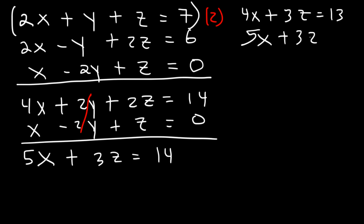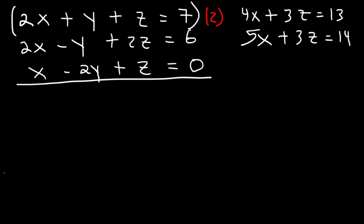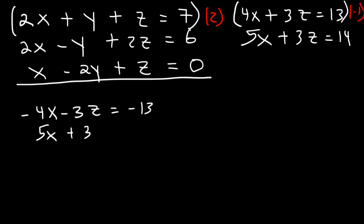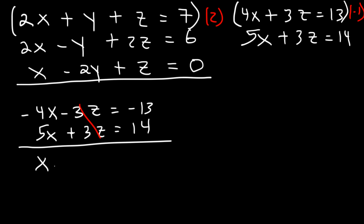So the second equation in terms of x and z is 5x plus 3z equals 14. To solve these two equations, multiply the first one by negative one: negative 4x minus 3z equals negative 13. Rewrite the other equation beneath it and add. The z terms cancel, negative 4x plus 5x is x, and negative 13 plus 14 is 1, so x equals 1.